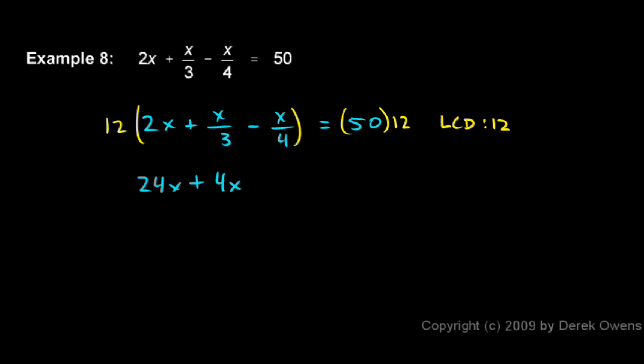Then I have a minus sign, and now I multiply the 12 times the x over 4, and the 12 over 4 reduces to a 3, and that's still multiplied by this x, so this is 3x.